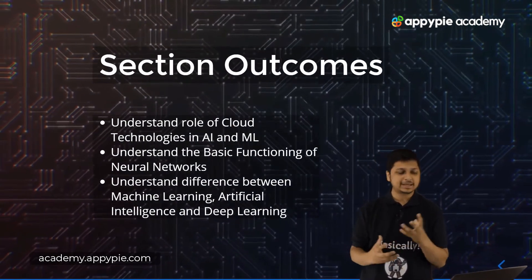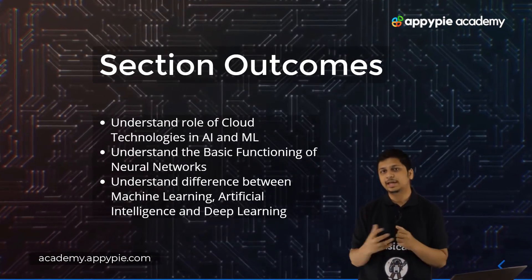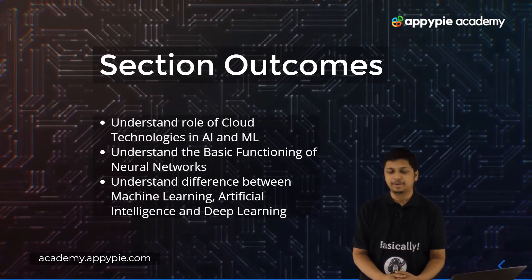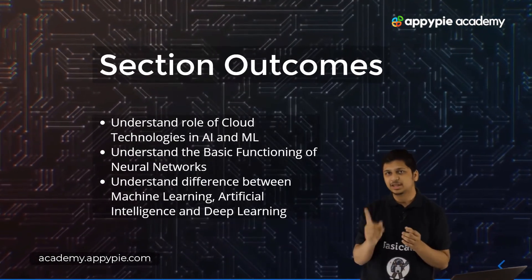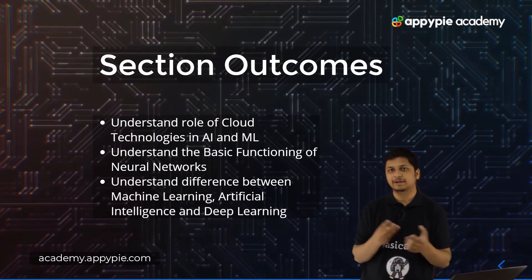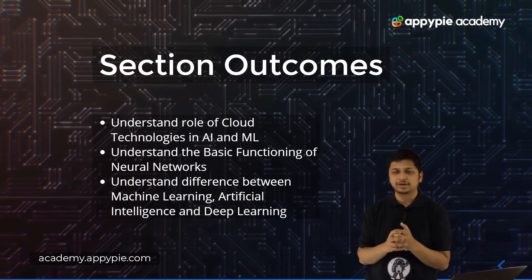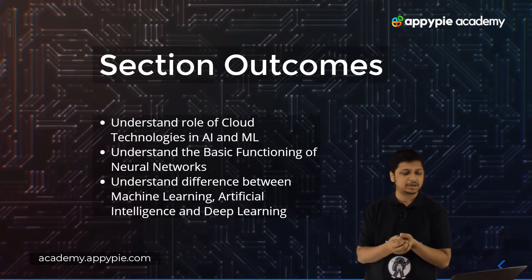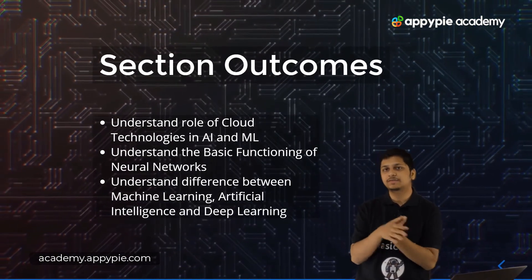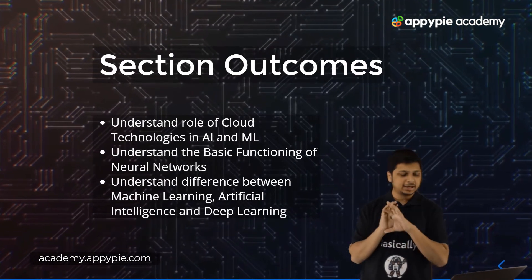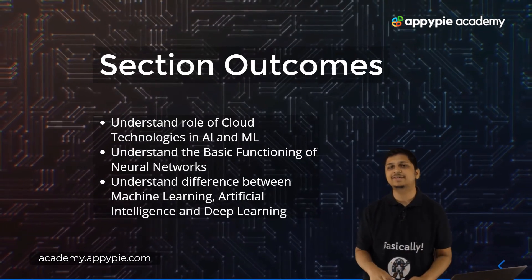The section outcomes include: understanding the role of cloud technologies in artificial intelligence and machine learning, understanding the basic functioning of neural networks, and understanding the difference between machine learning, artificial intelligence, and deep learning — because these three terms are often used analogously but they are not the same. There is a lot of different architecture involved behind each of these terms and definitions, and we will look at them in detail in this section. Now let's proceed to the very first lecture.